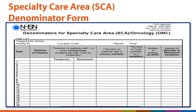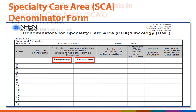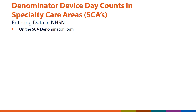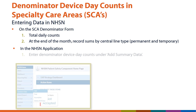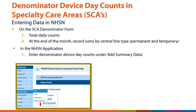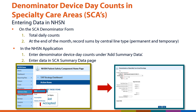Here is the SCA denominator form. The denominator device day counts are recorded in the columns noted temporary and permanent. When entering data on the SCA denominator form, total the daily counts. At the end of the month, record sums by central line type. When entering summary data in the NHSN application, enter denominator device day counts under the option to add summary data, then enter the data in the SCA summary data page.